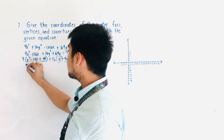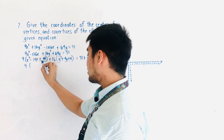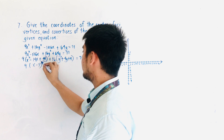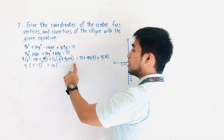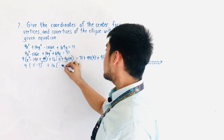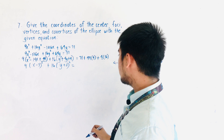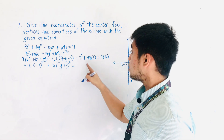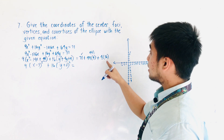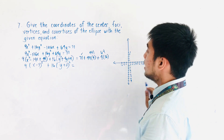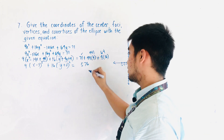We're now ready to factor. We have 9(x² - 14x + 49) = 9(x - 7)², and 16(y² + 4y + 4) = 16(y + 2)². The right side is now 71 + (49 × 9) + (4 × 16) = 71 + 441 + 64 = 576.